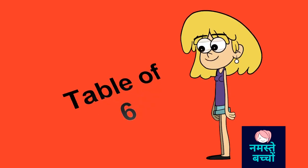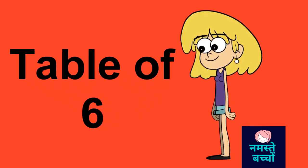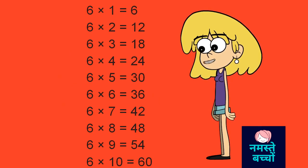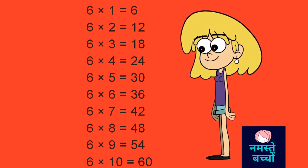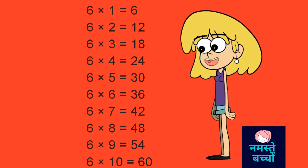Table of Six: 6-1's are 6, 6-2's are 12, 6-3's are 18, 6-4's are 24, 6-5's are 30, 6-6's are 36.